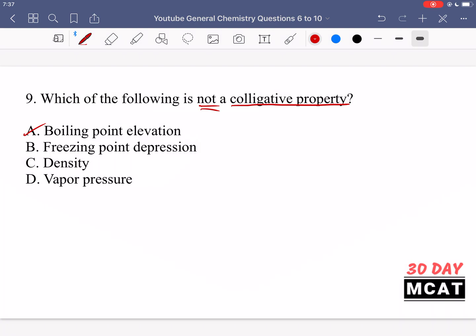Freezing point depression is a colligative property. Density is not. And vapor pressure is a colligative property. Vapor pressure is pretty much directly related to boiling point as well. But option C, density? No. The density of any substance is related to the actual properties of the substance. So water has a specific density, salt has a specific density, and then we can have salt water which will have its own density that's different than sugar water. So it's definitely not a colligative property.